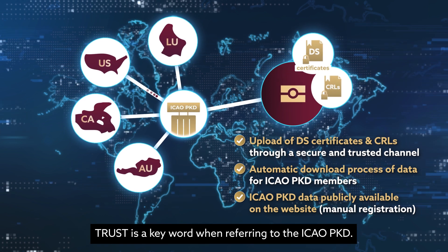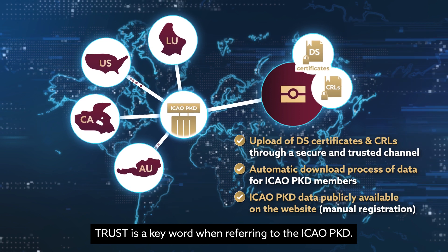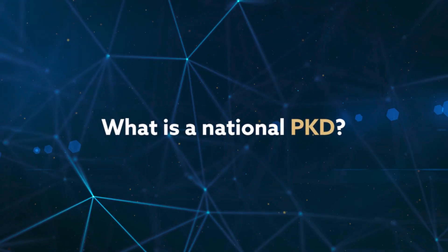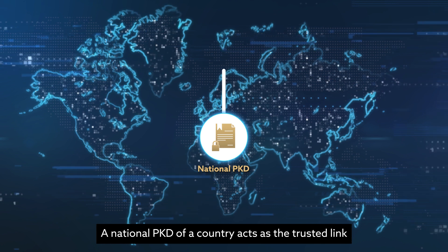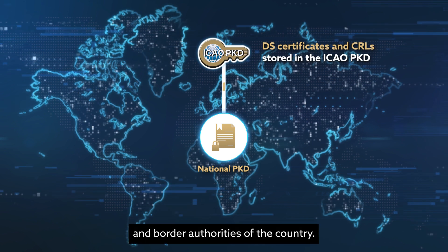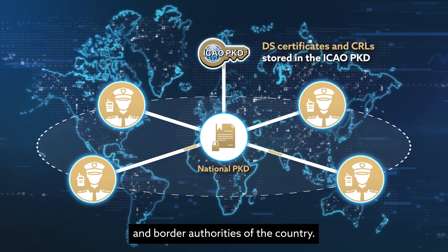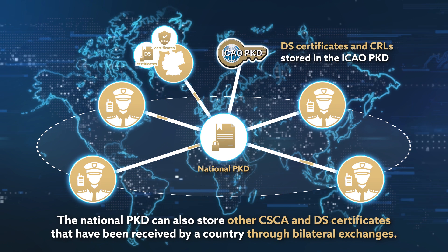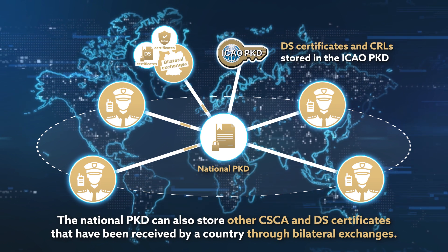Trust is a key word when referring to the ICAO PKD. A national PKD of a country acts as the trusted link between the ICAO PKD and the border authorities of that country. The national PKD can also store other CSCA and Document Signer certificates that have been received by a country through bilateral exchanges.